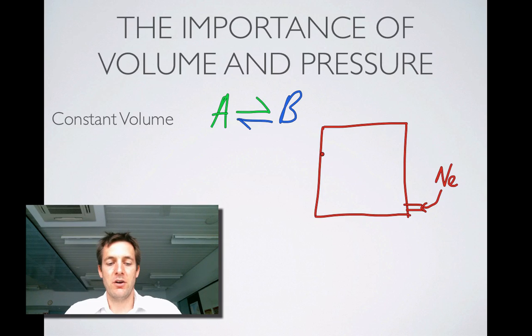Clearly, if I've got this box here and it's got some A's in it and it's got some B's in it that are reacting together in both forward and backward directions, if I start injecting more gas into here, then the pressure is going to increase. So my adding this noble gas will cause an increase in the pressure.